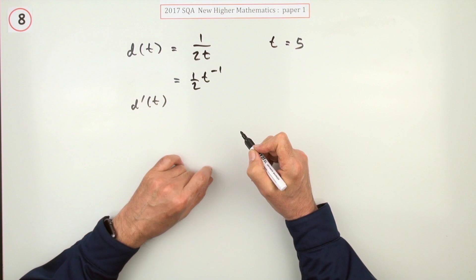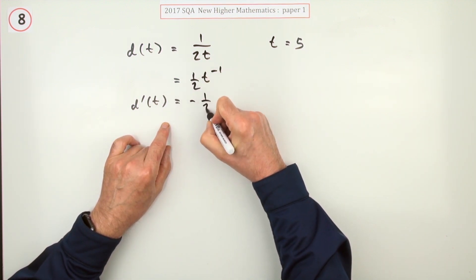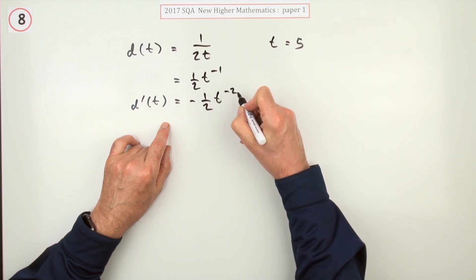So d'(t), because I don't want dd, will be multiplied by the power, so that's negative a half t to the negative 2.